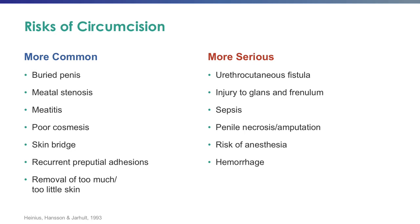Risks of circumcision include more commonly encountered complications such as a buried penis, meatal stenosis — which occurs related to irritation of the urethral meatus from chemicals in the diaper and can be prevented by using a topical antibiotic to the tip of the penis after circumcision for the first week — meatitis, poor cosmesis, penile skin bridges (adherence of penile shaft skin to the glans related to scar formation, which will not resolve spontaneously), recurrent preputial adhesions where the penile skin sticks to the glans but is not related to scarring and will spontaneously resolve, and the removal of too much or too little penile skin. More serious complications include a urethrocutaneous fistula, injury to the glans and frenulum, sepsis, penile necrosis and amputation, risks of anesthesia, and hemorrhage.